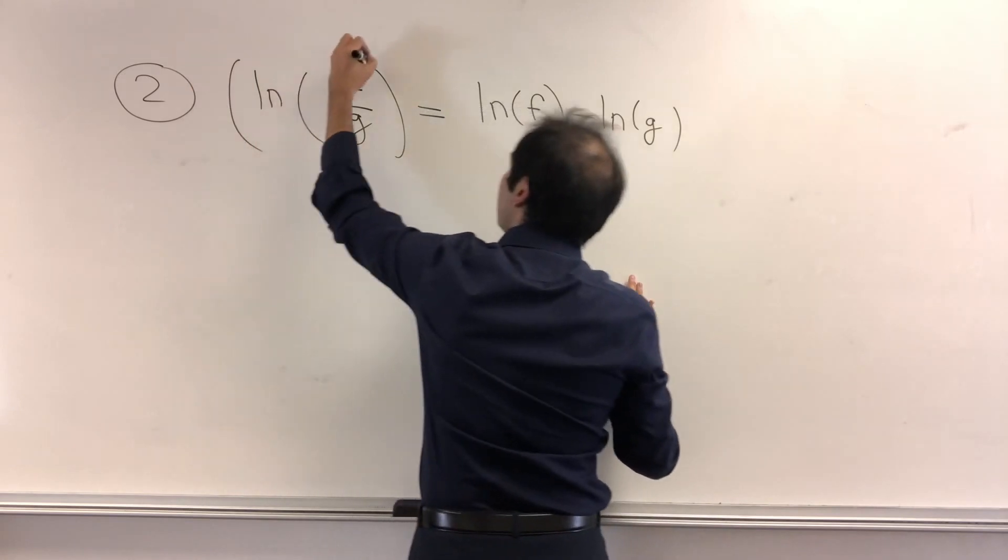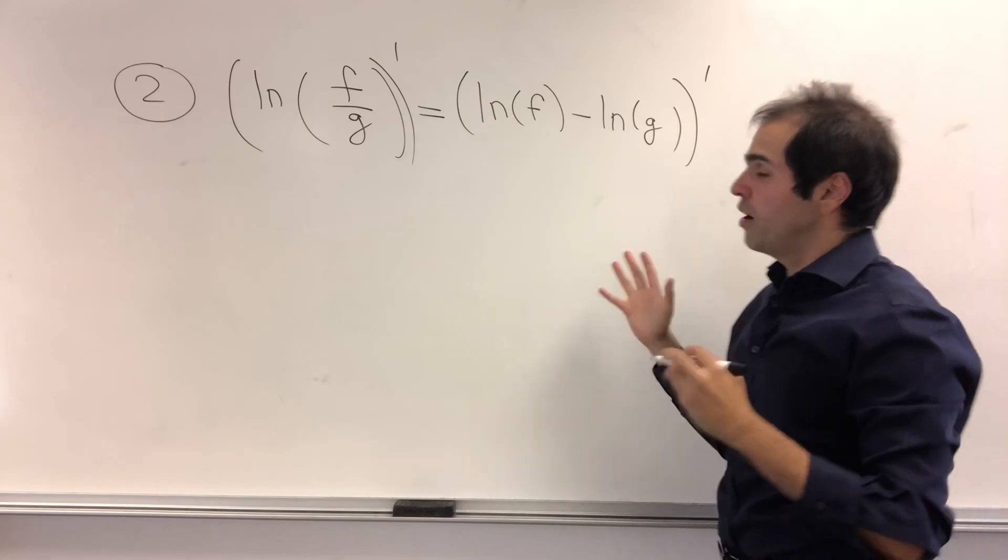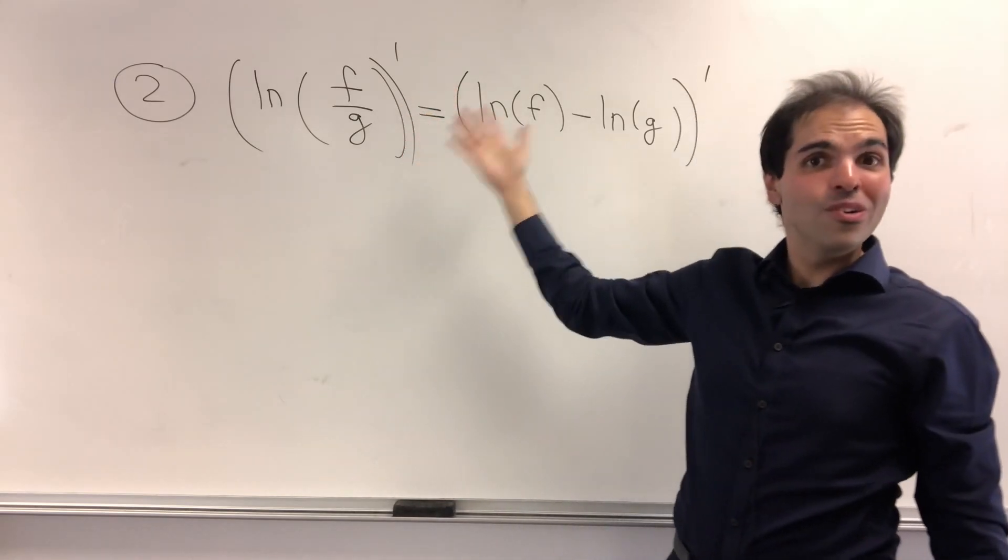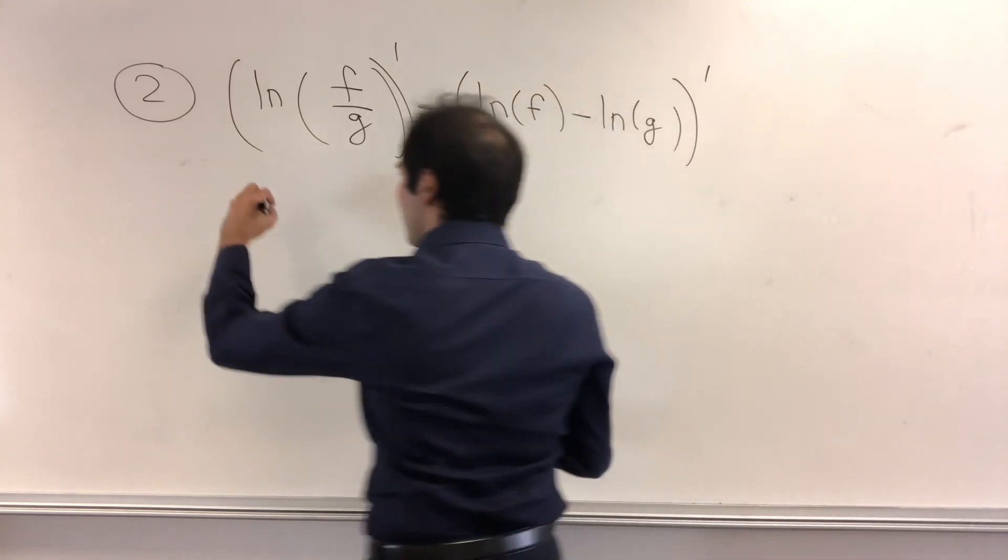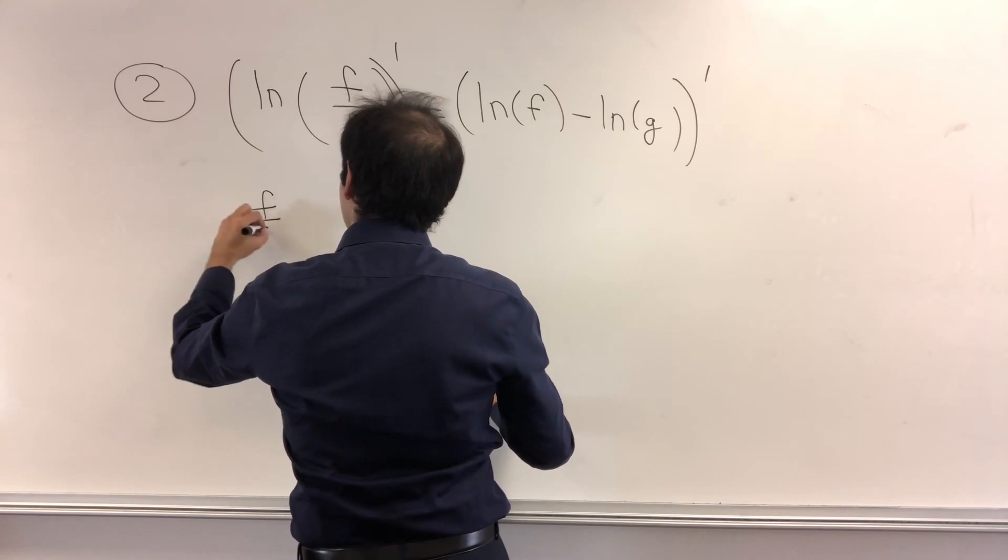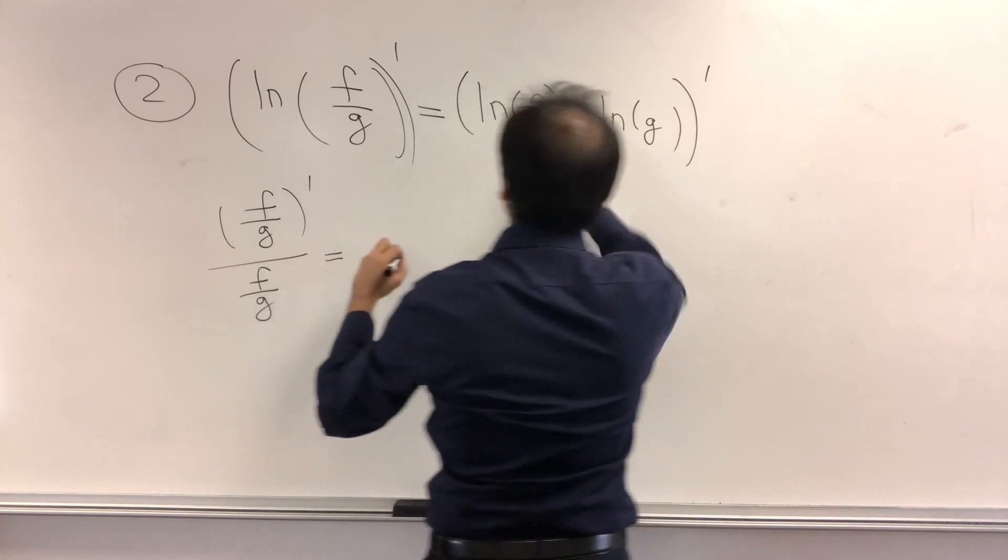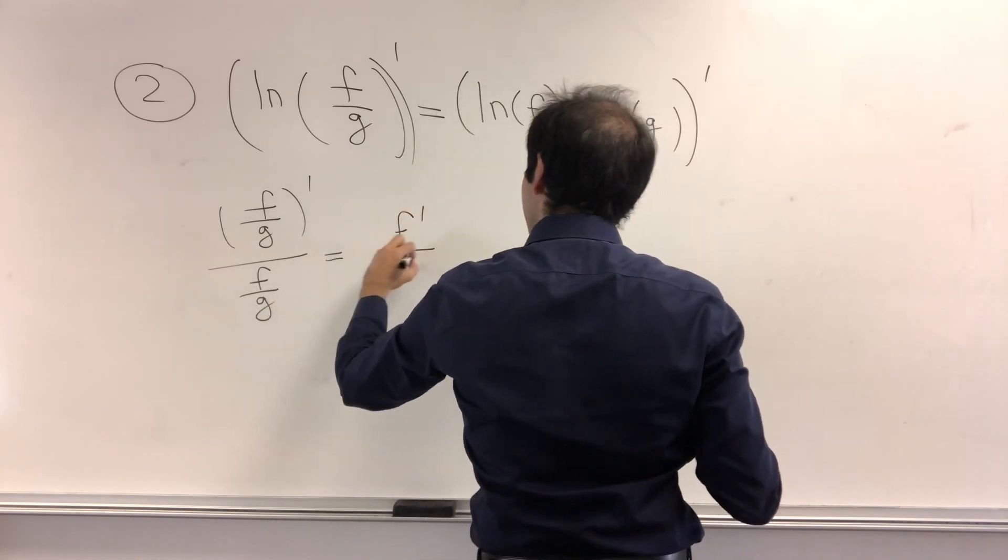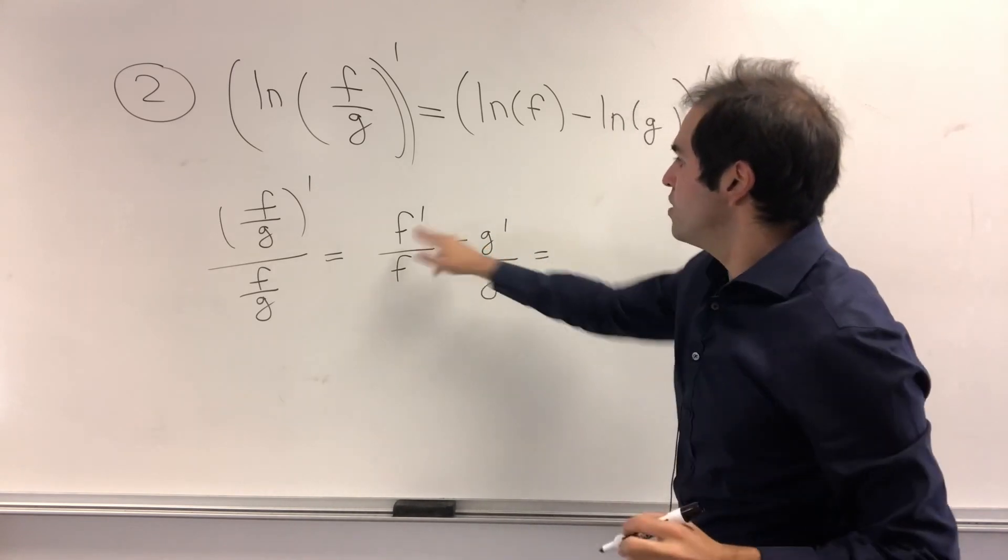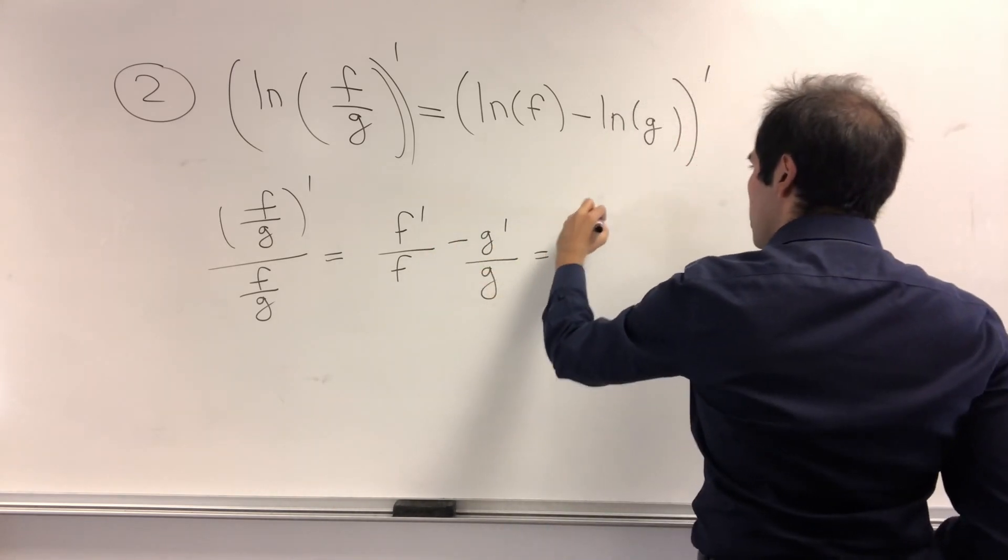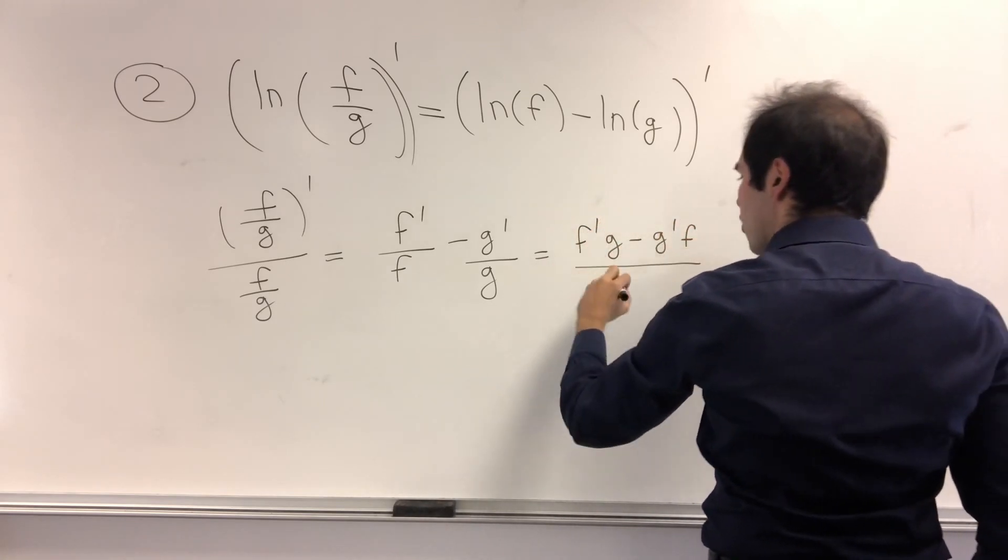how about we take derivatives on both sides? Then ln of f over g prime, that's ln of f minus ln of g prime. And now, using the Chen loop, because it is a prime example of the Chen loop, we get f over g, so f over g prime over f over g equals f prime over f minus g prime over g. And notice, you can just put this on a common denominator, and we get f prime g minus g prime f over f g.